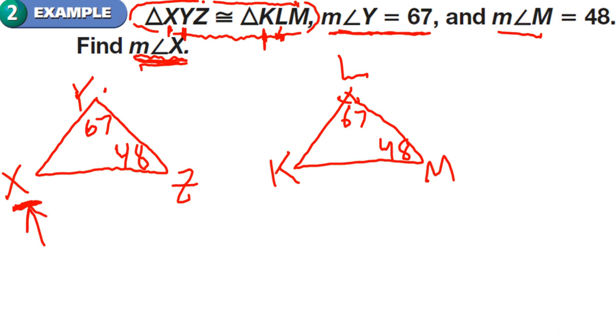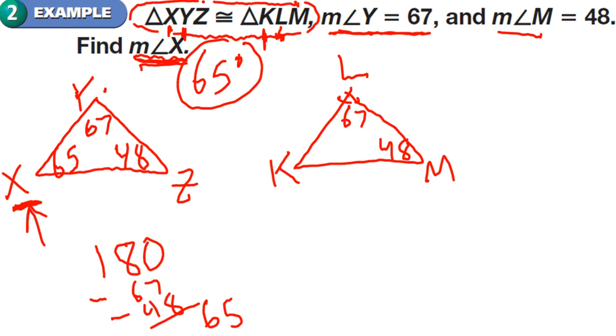So thinking back to what we learned in the last lesson, in the previous unit, we remember that triangles have an angle sum of 180 degrees. So let's subtract 67, and let's subtract 48 off of there, and let's see what we get. And when we do that, it looks like we get 65. So that indicates to us that angle X is 65 degrees. And now we were able to answer the question.